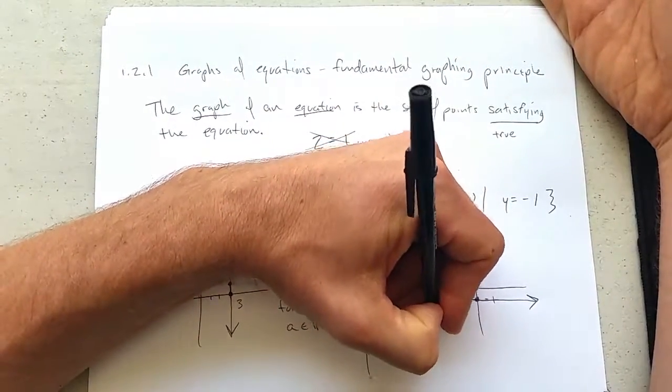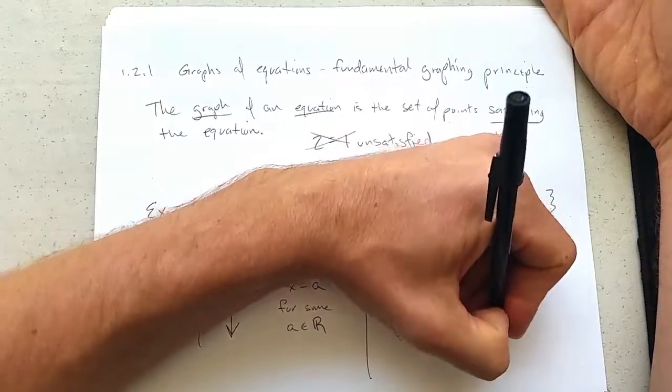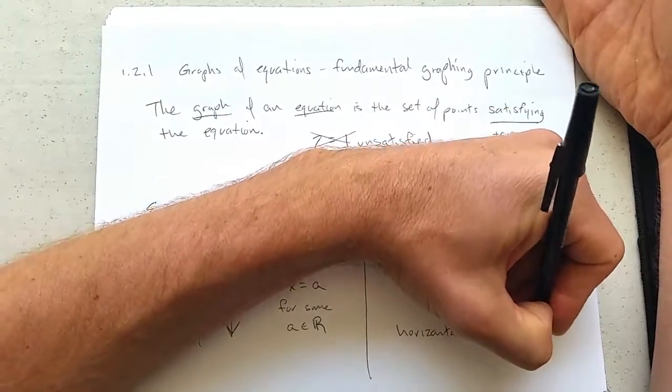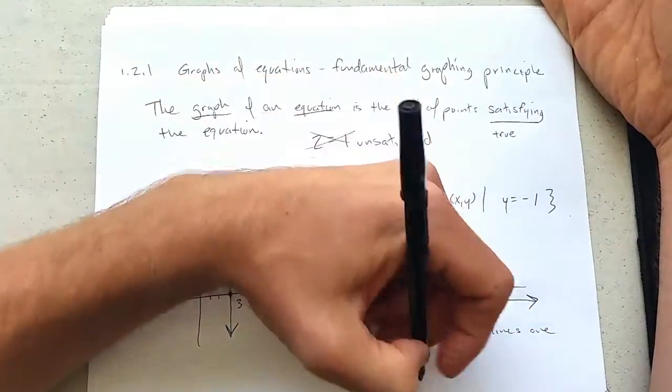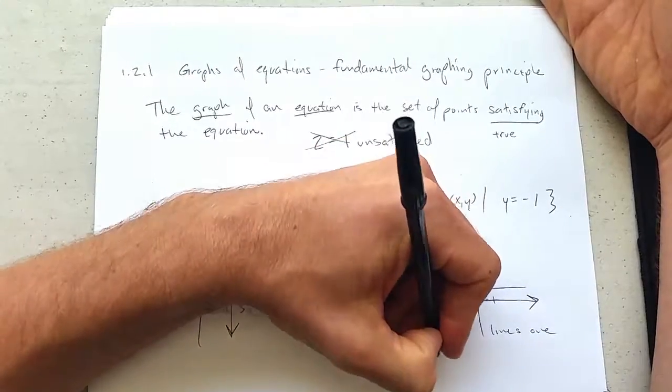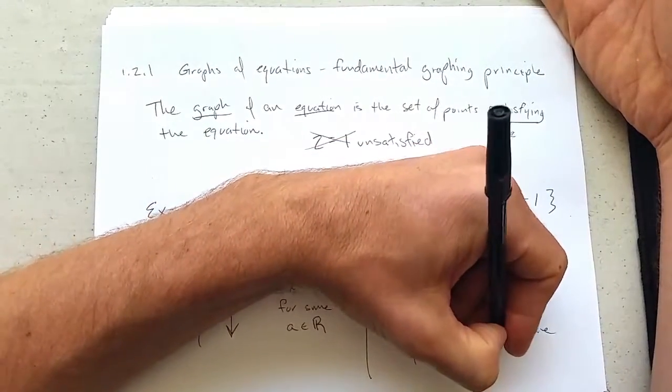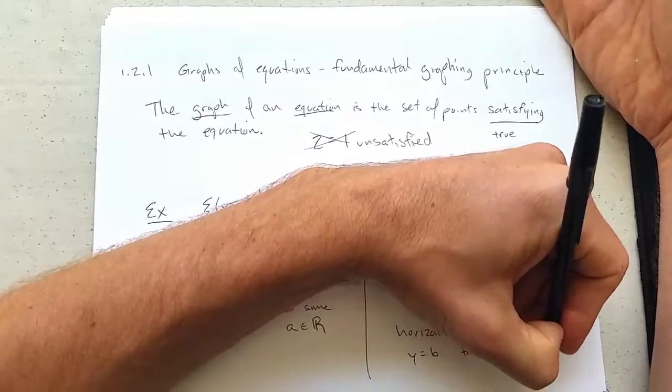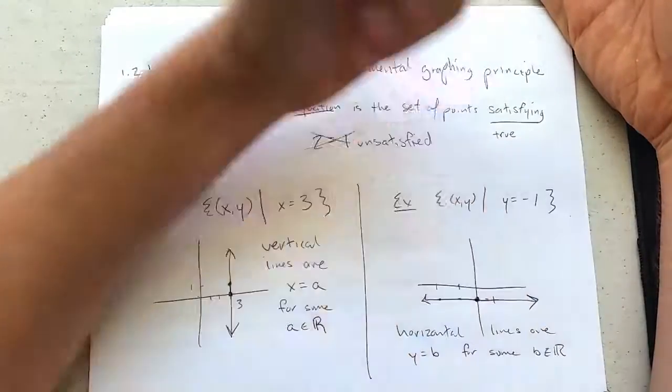And this is horizontal line. So horizontal lines are equations that look like y equals b, b for some b in the real numbers.